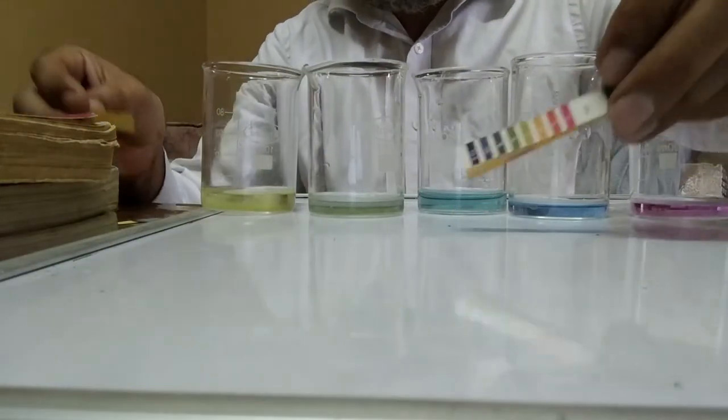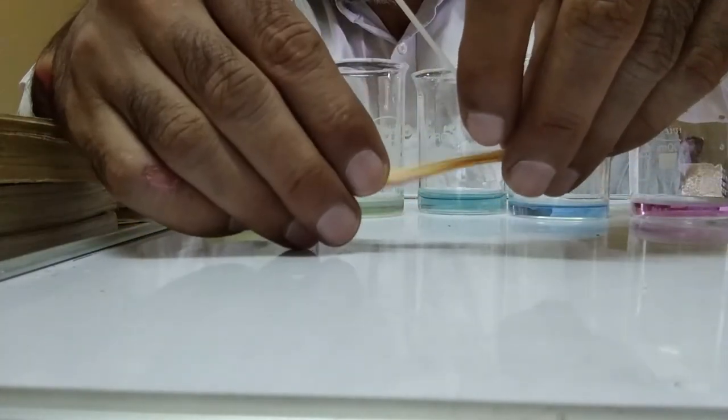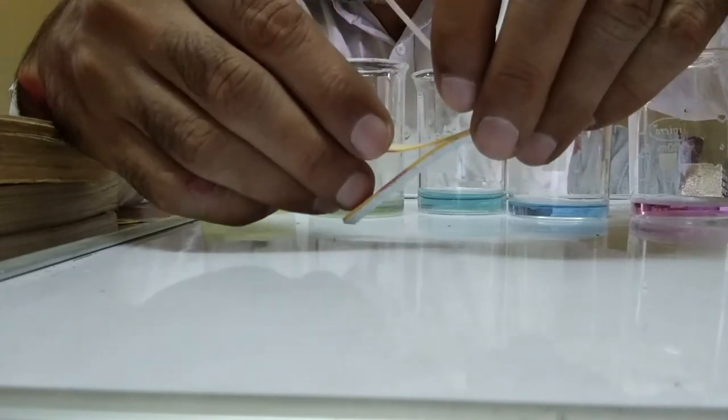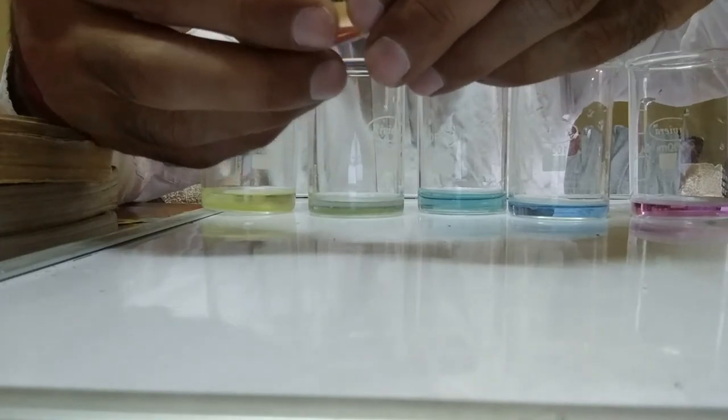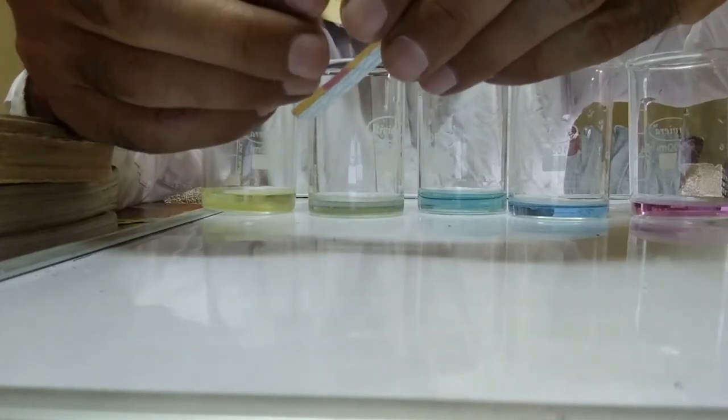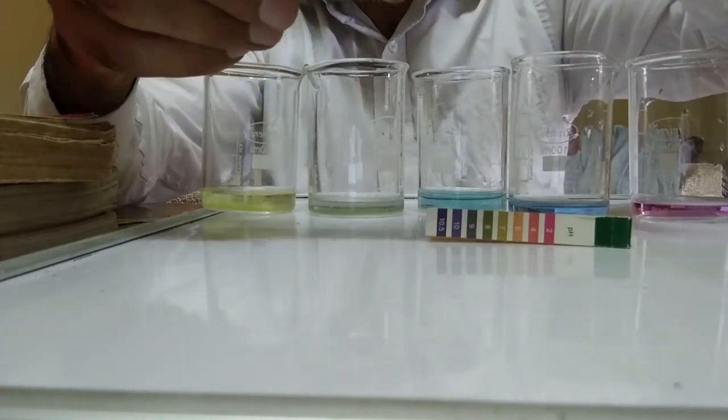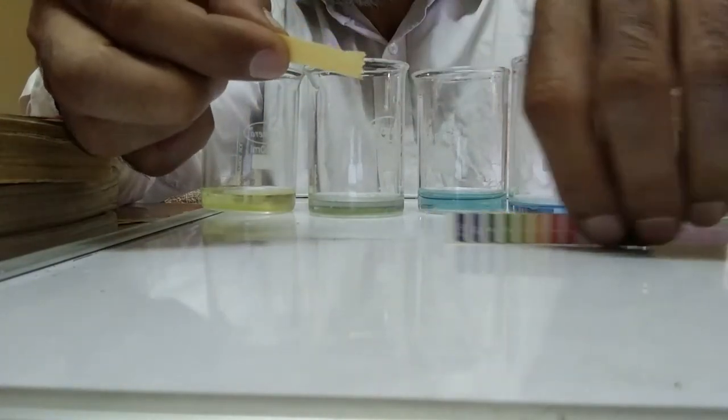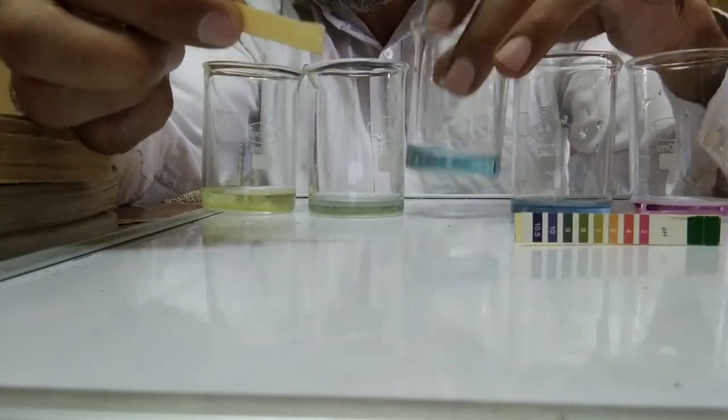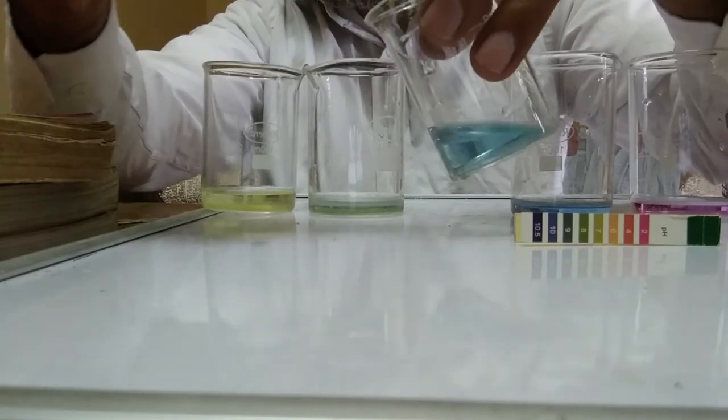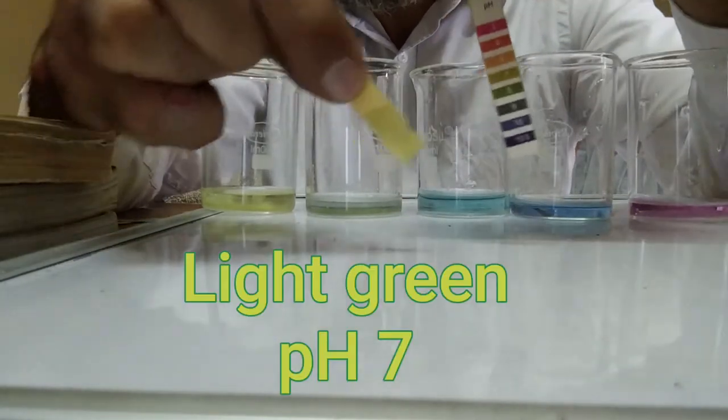The next one is pure water extract. Its pH should be around 7. That means light green colour it should produce on pH paper. Here is the water extract. It is indeed as expected light green, so pH is 7.